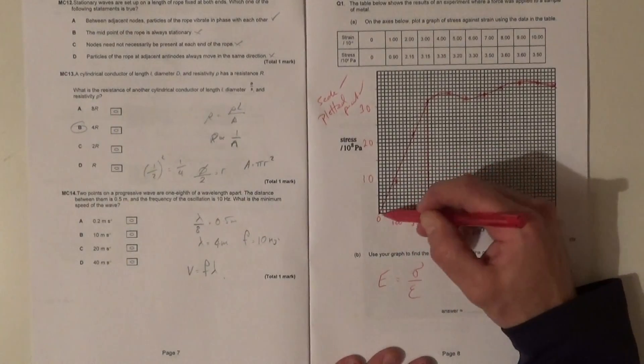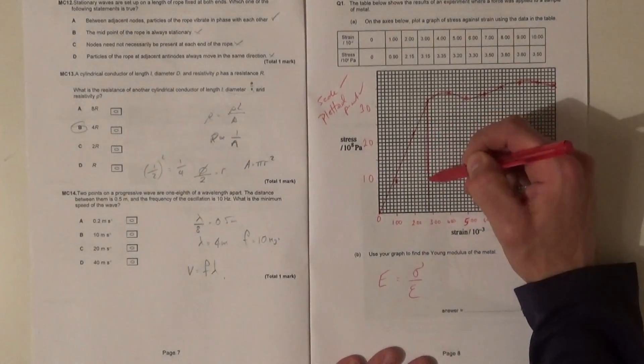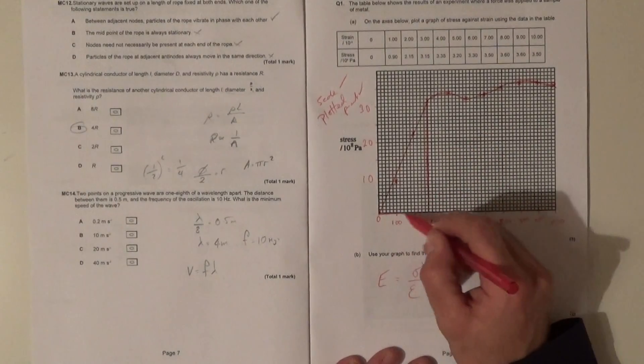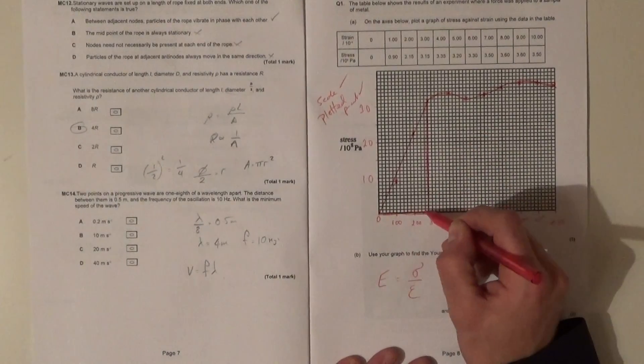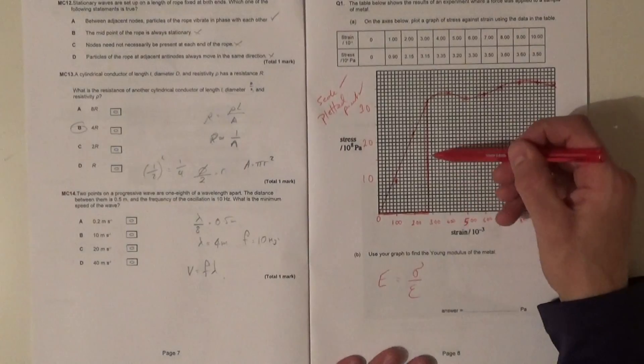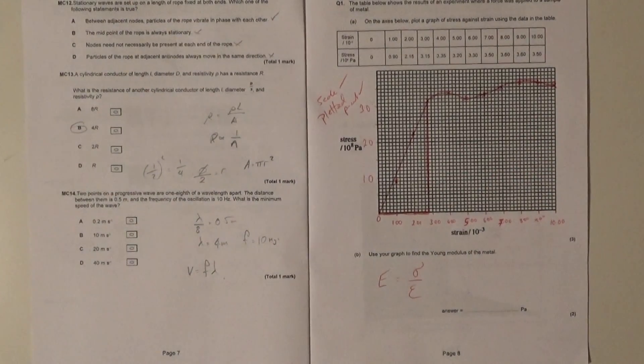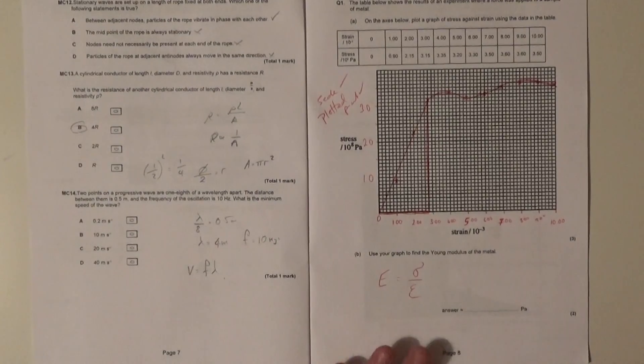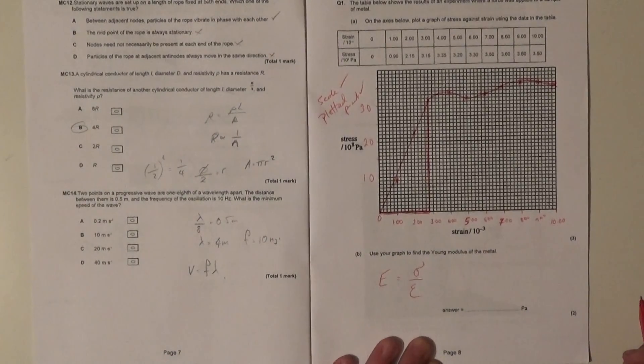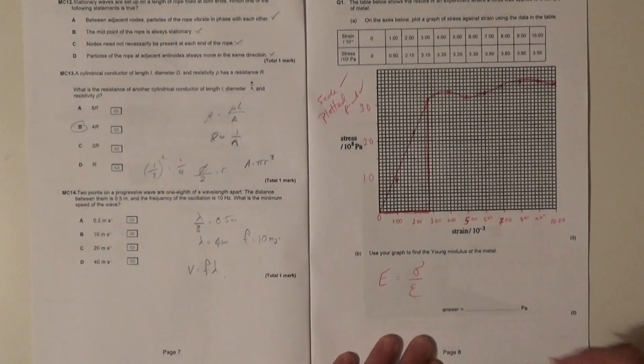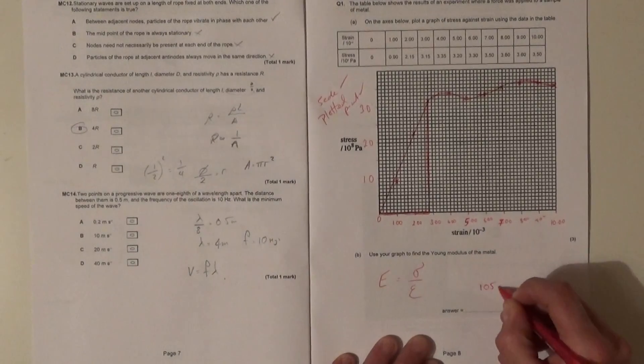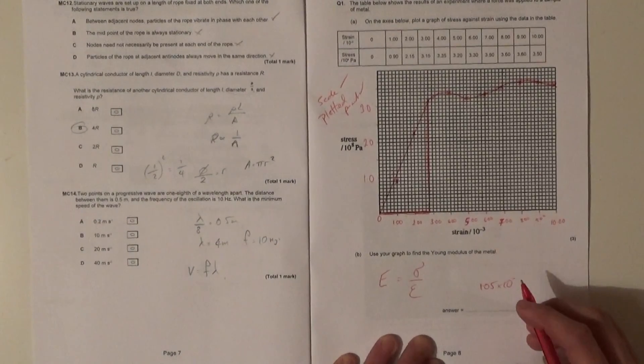Always, if you have a line that goes through zero, please please please make sure you use zero because it just means you're much less likely to make a mistake. So nice big gradient triangle something like that, really. You measure stress divided by the strain and you get your value.